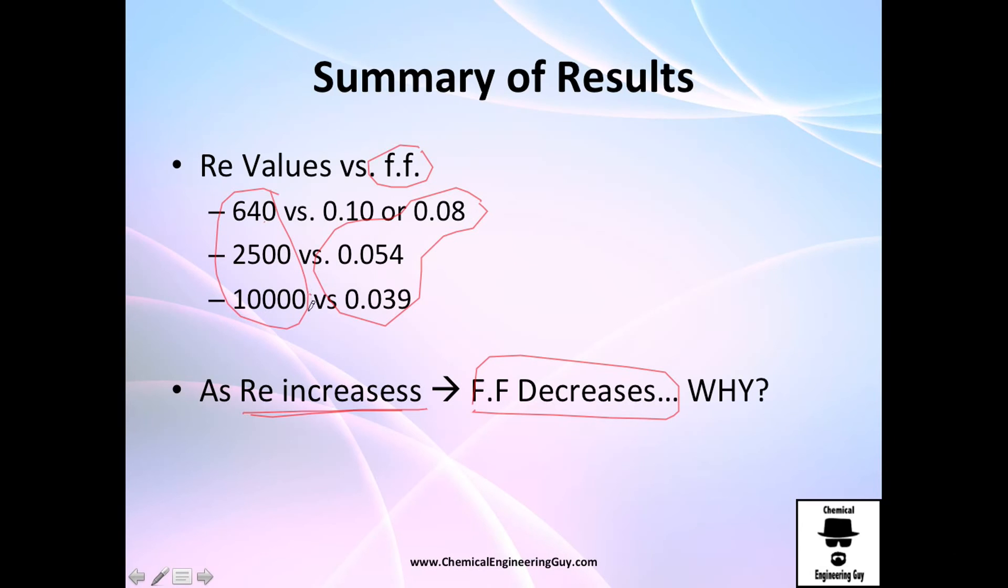100,000 has 0.039. So, as the Reynolds number increases, the friction factor decreases. And I leave you the question of why. You should know by now.